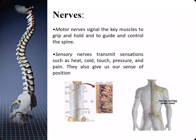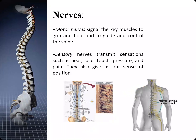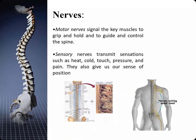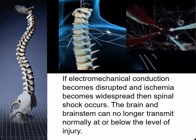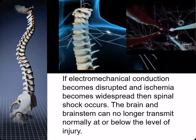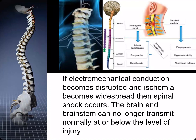We have motor nerves and sensory nerves. Motor nerves signal the muscles to grip, hold, guide, and control the spine. Sensory nerves transmit sensations such as heat, cold, touch, pressure, and pain. Because the sensory nerves transmit sensations, they are very important when looking at a patient for back pain or trauma. If there is trauma or some other mechanism where the electromechanical conduction of energy becomes disrupted and ischemia becomes widespread, then spinal shock occurs. This swelling prevents the brain and brain stem from transmitting normally at or below the level of the injury. If the swelling is the only trauma, then when the swelling goes down, the sensations return.